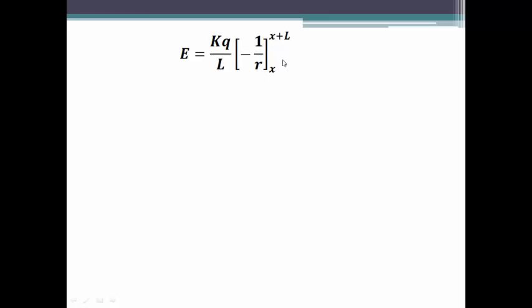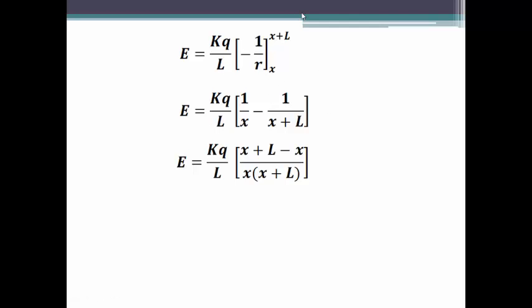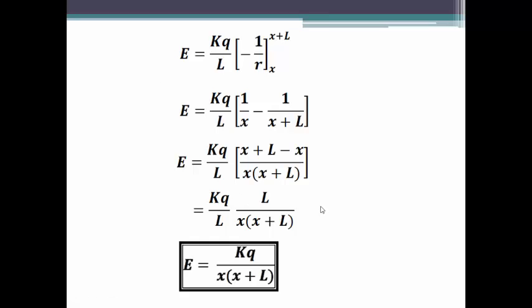So applying the limits, since there is the minus sign we will have lower limit minus upper limit. Simplifying it, cancelling L over here, we get the final expression for electric field along the axis of a charged rod.